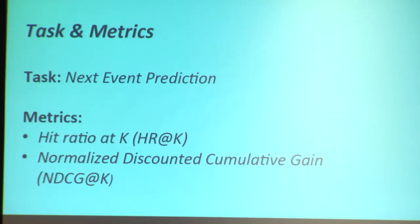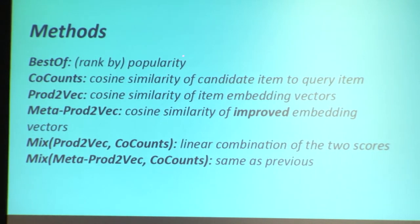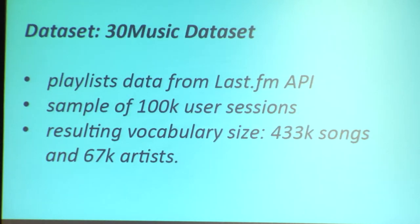Now let's go over the experimental results. We chose the task of next event prediction, using ranking metrics hit ratio at K and NDCG. The competing methods are: rank by popularity (Best-of), a baseline neighborhood model doing cosine similarity of candidate items to the query item, Prod2Vec, Meta-Prod2Vec, and two ensemble methods as a simple linear combination of two scores. The dataset is the 30 Music dataset, generated from playlist data from the LastFM API, using 100,000 sample of user sessions — with a lot of songs and a lot of artists.